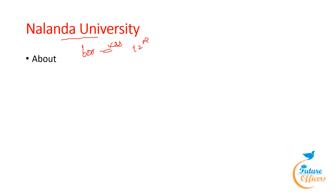Subjects such as medicine, Ayurveda, religion, Buddhism, mathematics, grammar, astronomy, and Indian philosophy were taught there. It continued to be a center of intellectual activity until it was destroyed in the 12th century AD by the Turkish commander Bakhtiyar Khilji. The university was rediscovered in 1812 by Scottish surveyor Francis Buchanan-Hamilton and later identified as the ancient university by Sir Alexander Cunningham in 1861.